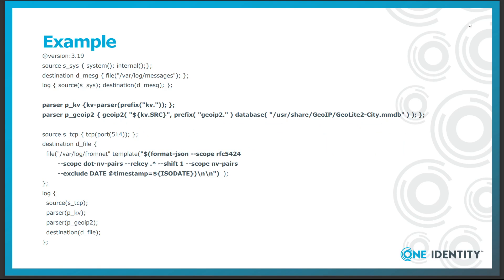As usual, the first few lines of the configuration deal with local log messages. The interesting part comes afterwards. Let's follow the log statement at the end, as this is what connects all the building blocks together. The first line opens a TCP source on port 514. The next line is where things start to get interesting — it calls the key-equals-value parser on incoming log messages. The prefix "kv." here means that the name of all resulting name-value pairs will start with "kv.".